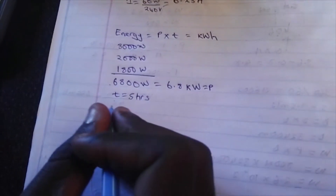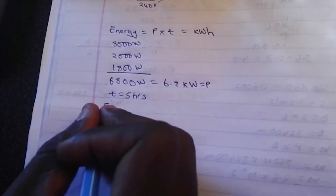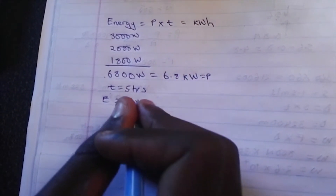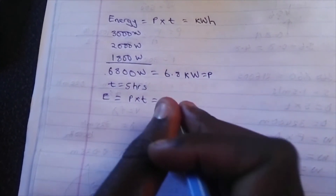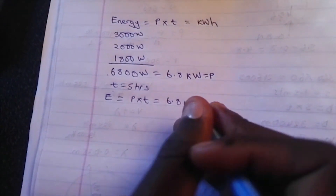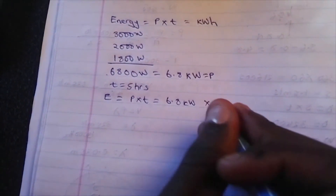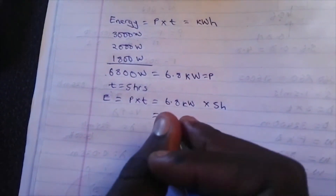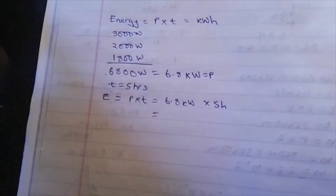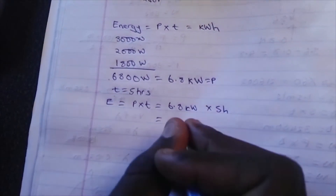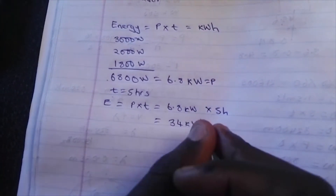To find the energy, E is equal to power times time, which will be equal to 6.8 kilowatts times 5 hours. This gives us 34 kilowatt hours.